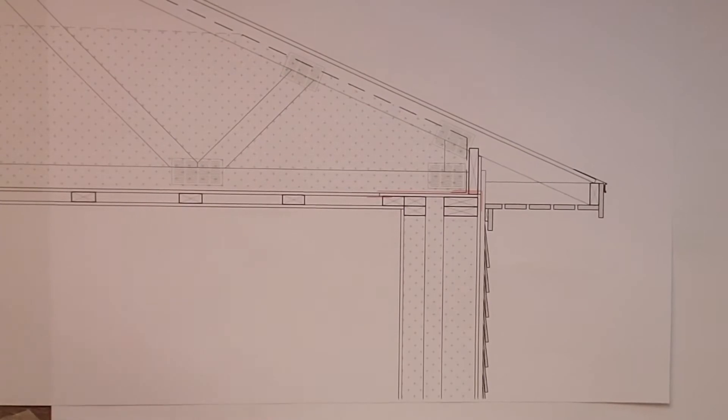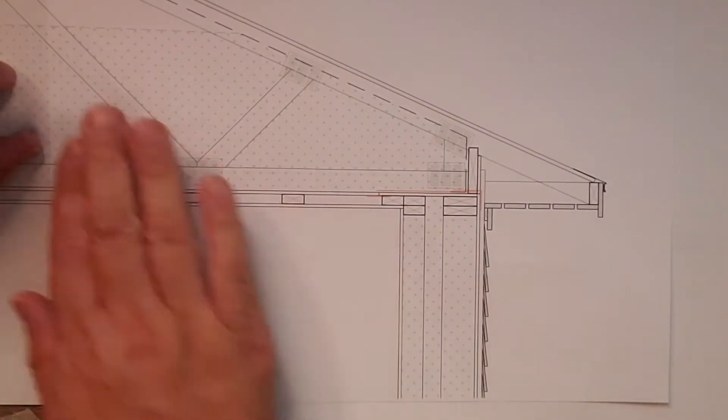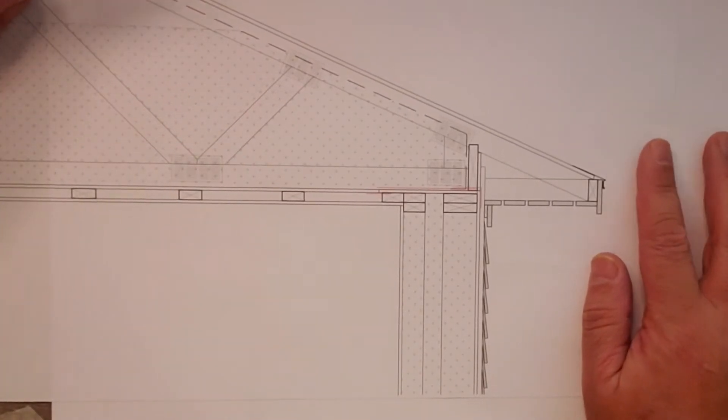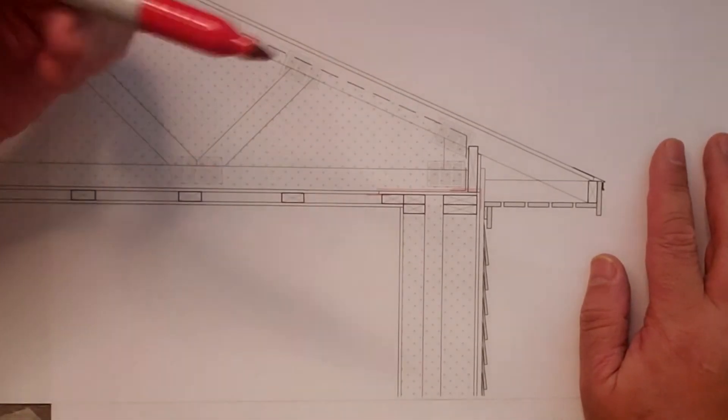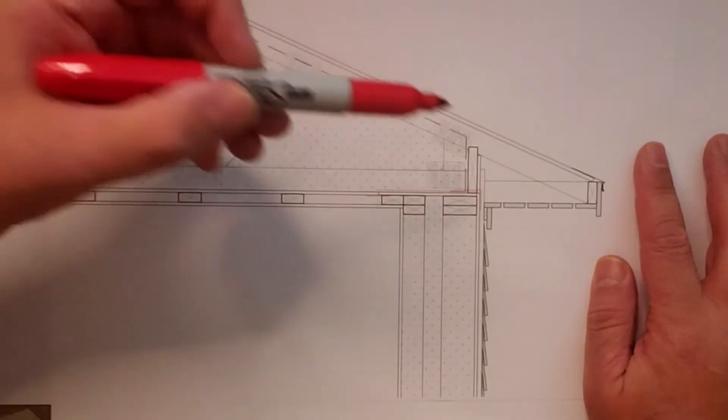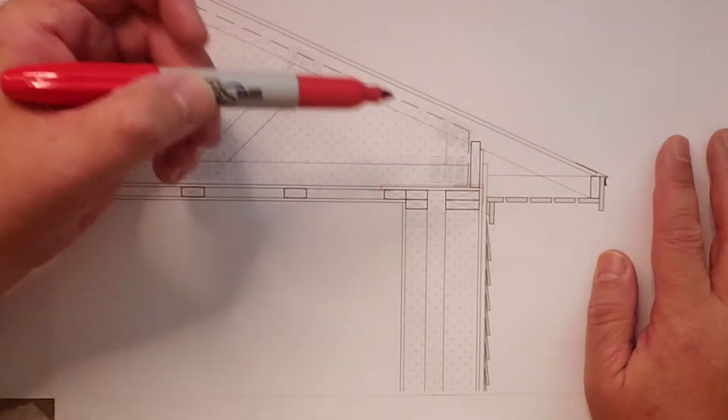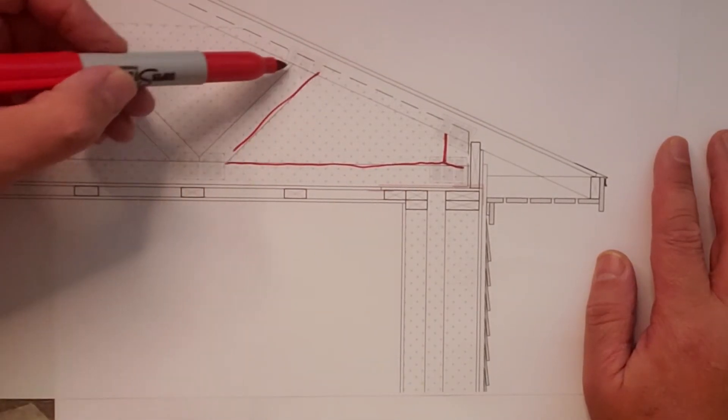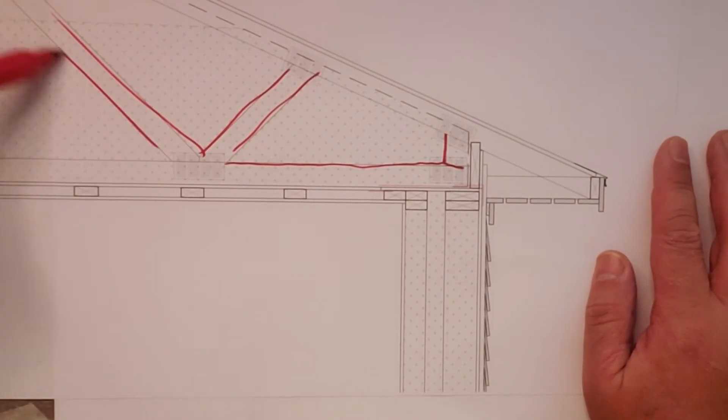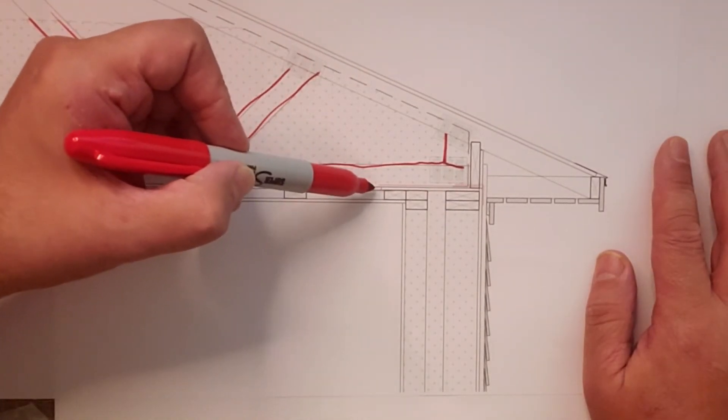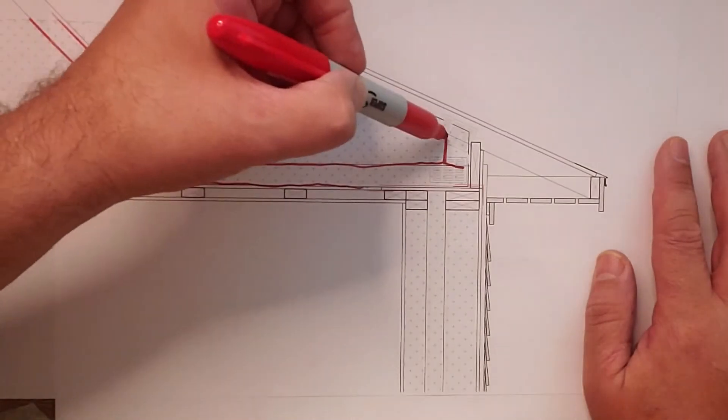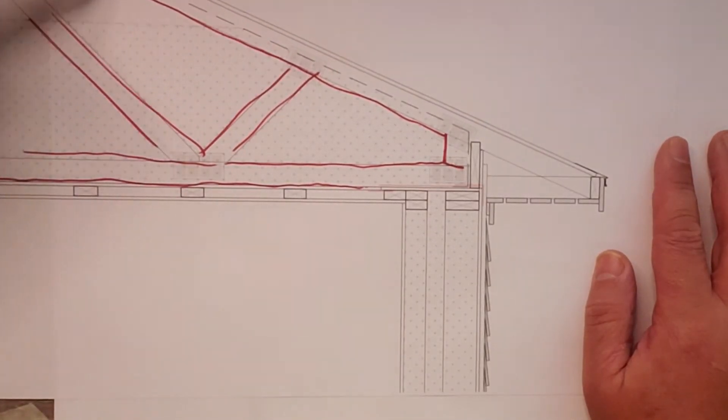All right. So got Big Red. We broke out one of the details here. Stripped all the notes off of it for clarity. Let's give you a little bit of location here. So you can see the truss here happening. The bottom cord of the truss happening along here. Basically the rough frame of the roof.